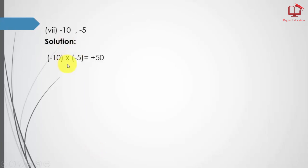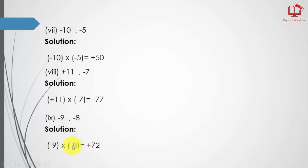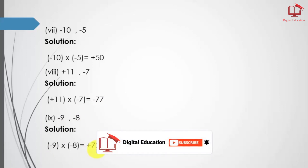Then 10 multiplied by 5: the answer is 50, and minus times minus equals positive 50. Then 11 multiplied by 7 equals 77, and plus times minus equals minus. Then 9 times 8 equals 72, and minus times minus equals plus. I am again repeating: in multiplication we multiply the signs as well as the integers.